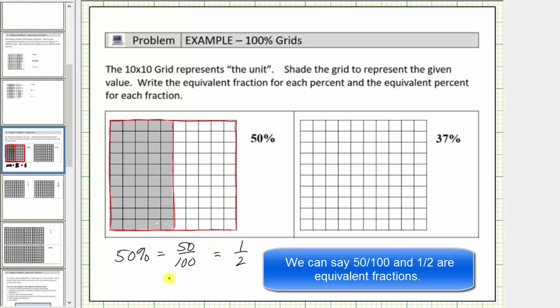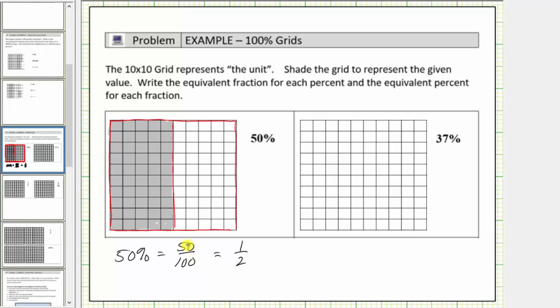A more traditional way to simplify the fraction would be to divide fifty and one hundred by fifty. Notice fifty divided by fifty is equal to one, and one hundred divided by fifty is equal to two, giving us the simplified fraction of one half.